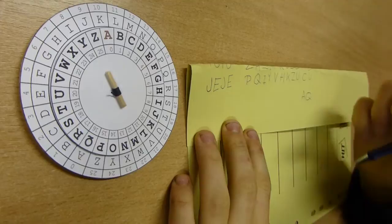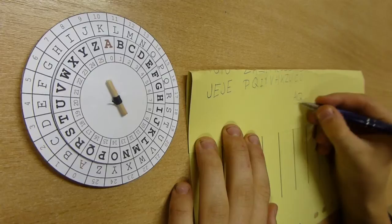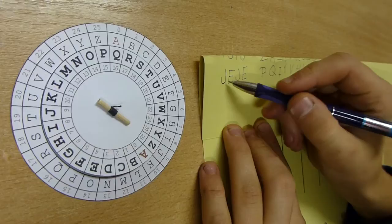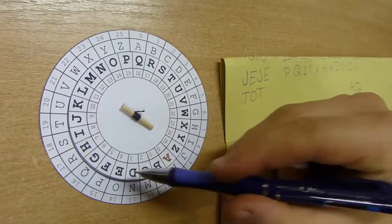Teď si ukážeme, jak šifrovou zprávu převést zpět na otevřenou a dostat si tak k informaci v ní ukryté. Musíme znát klíč. Nastavíme si kotouče podle klíče a jdeme na to. Vezmeme první znak šifrové zprávy, najdeme ho na šifrovém kotouči a zapíšeme si příslušný znak z otevřeného kotouče jako začátek otevřené, tedy vyluštěné zprávy. Nyní vezmeme další znak a postup se stále opakuje.